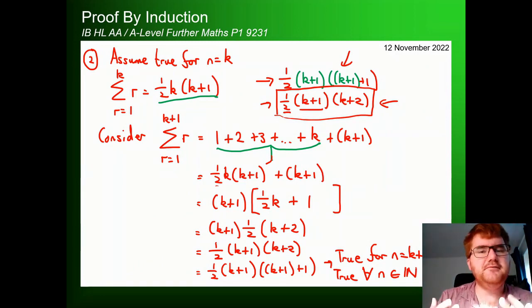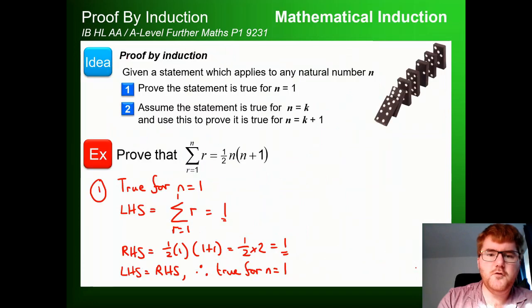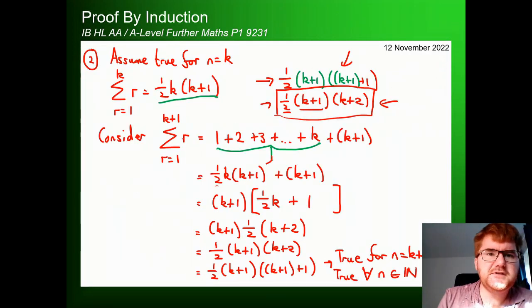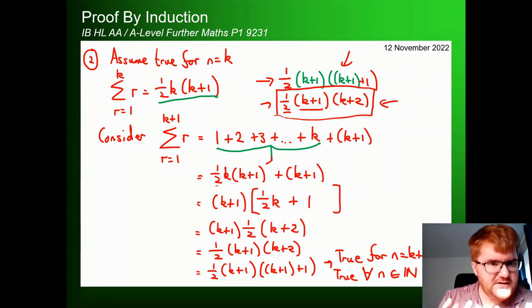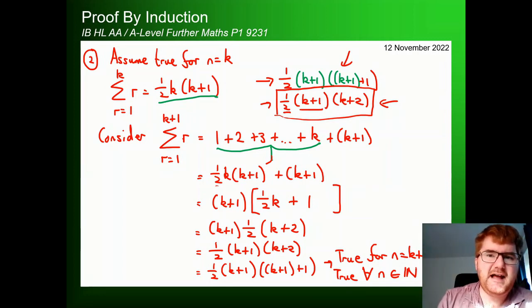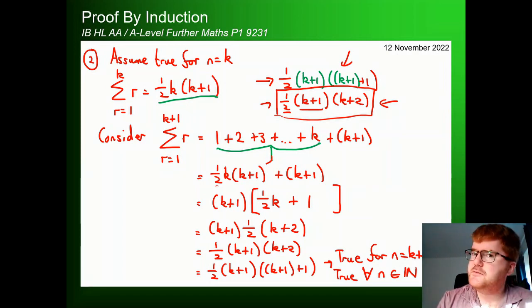That's the key process of proof by induction. First we do the base step. Then in step 2 we assume it's true for n=k by substituting k where n was. Then we consider the k+1 version and make it look like the target form. That just takes a bit of practice — I'm going to do a few examples today.